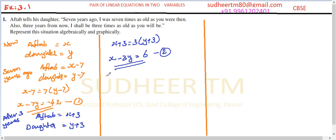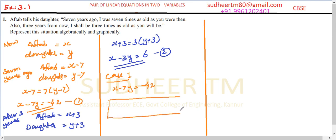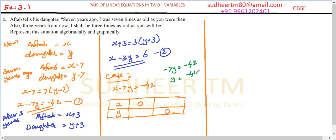For the graphical representation, case one: equation X minus 7Y equals minus 42. We construct a table with at least two points. When X equals 0, then minus 7Y equals minus 42, so Y equals 6. When Y equals 0, then X equals minus 42. So our two points are (0, 6) and (−42, 0).